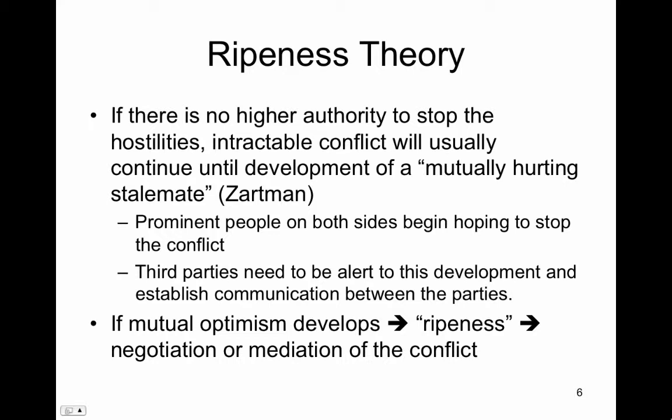This has to come from within, from the parties themselves. Ripeness is key to many successful cases of negotiations that led to an agreement, such as the case of Sinai in 1974, Southwest Africa in 1988, El Salvador in 1988, and Mozambique in 1992, among many others.